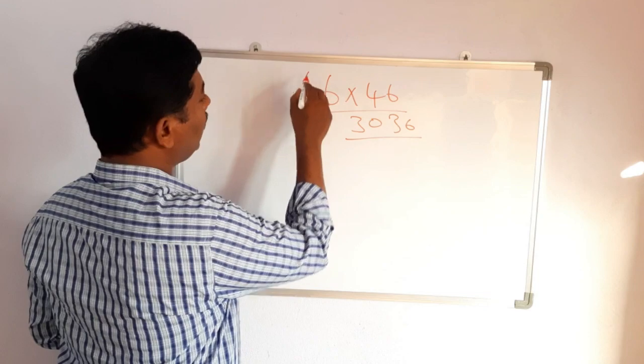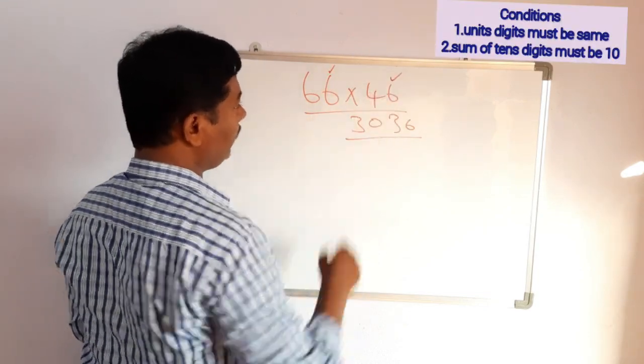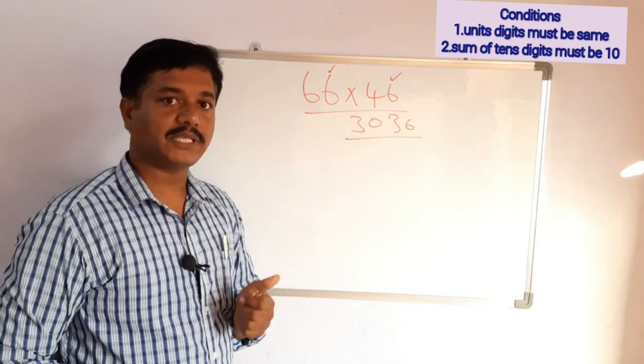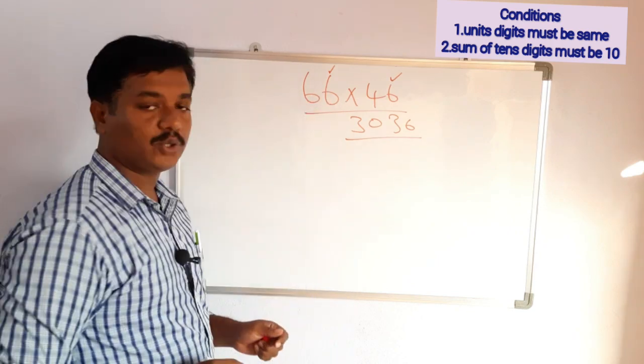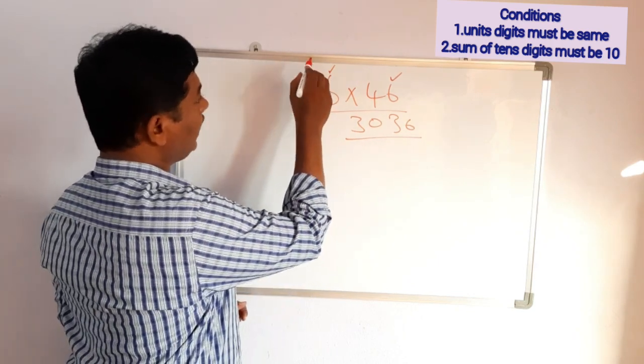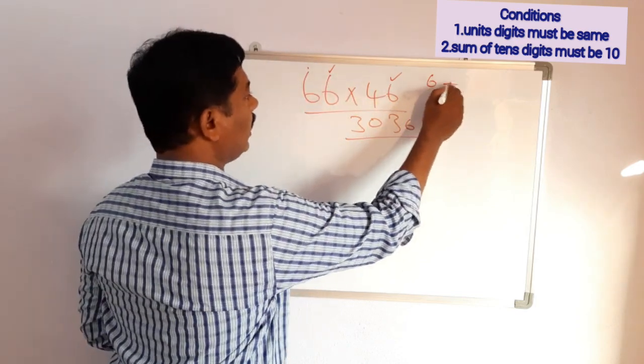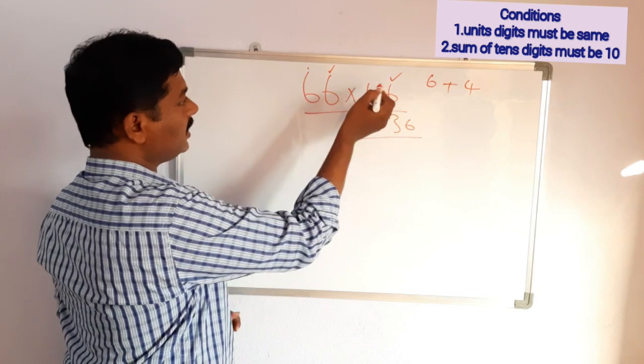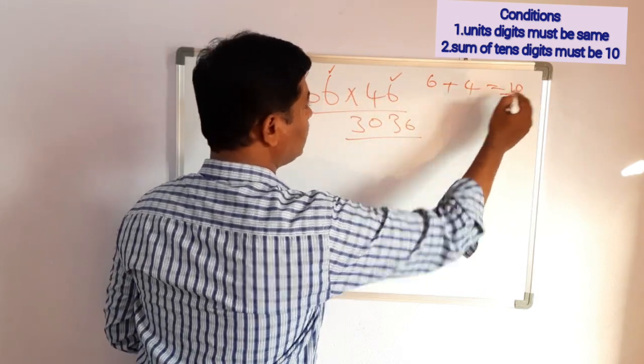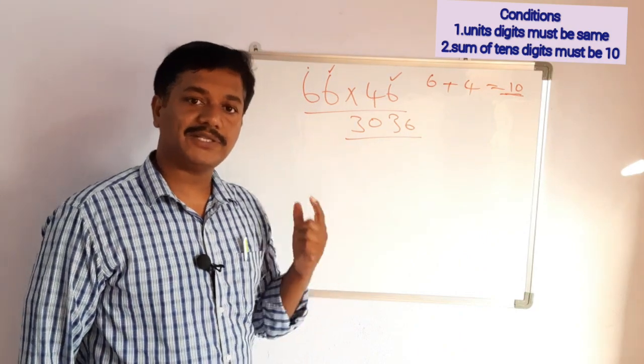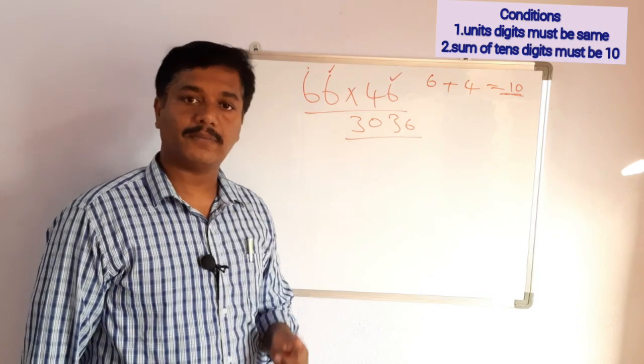First of all, here it has two conditions. First condition is the units place must be same. Here 6, here 6, both are same. Condition number 1 fulfilled. Next, condition number 2, the sum of the digits of the tens place must be equal to 10. Here 6 and 4. First tens place is 6, second tens place is 4. 6 plus 4 equals 10. Having fulfilled these two conditions, we can apply this trick for this kind of multiplication.